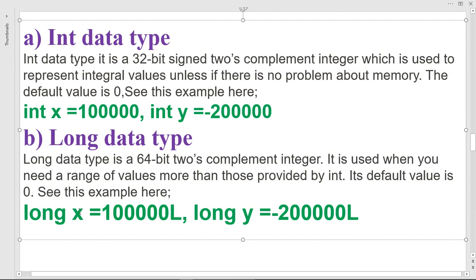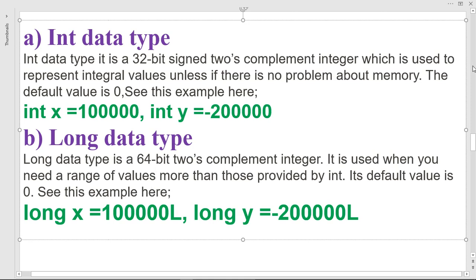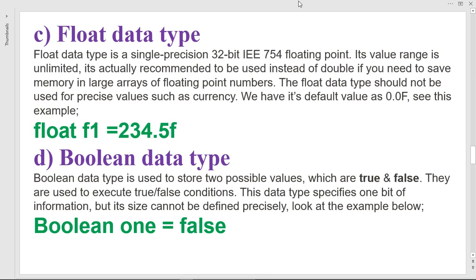For long, you write 'long x' and assign a value like 1000L. The 'L' suffix indicates it is a long number. So long is the same as int but stores larger numbers — int stores smaller numbers while long stores larger ones.